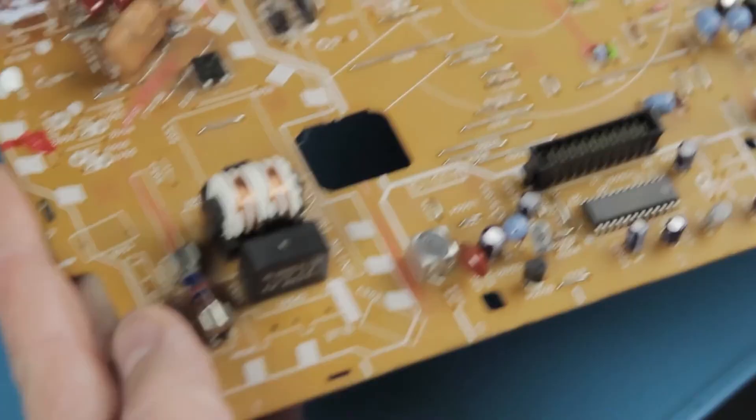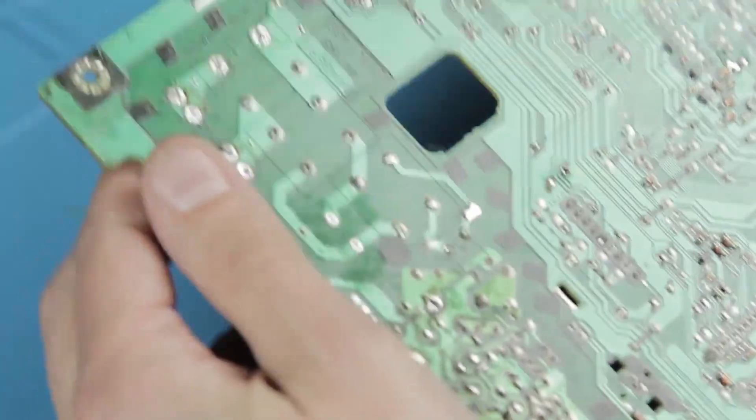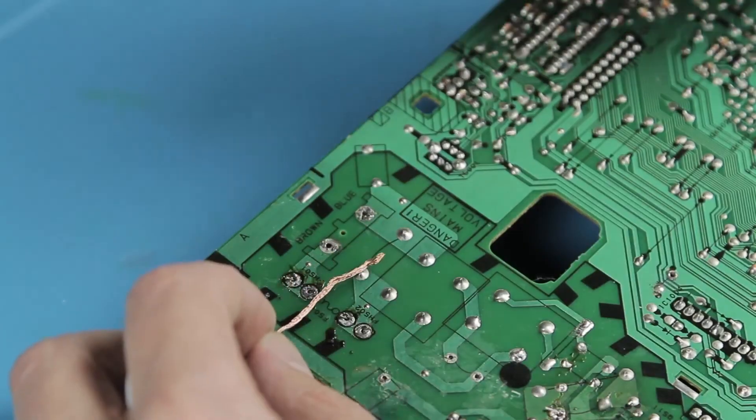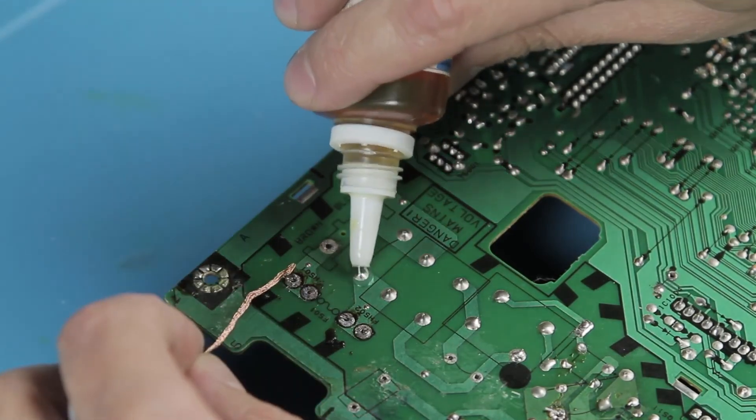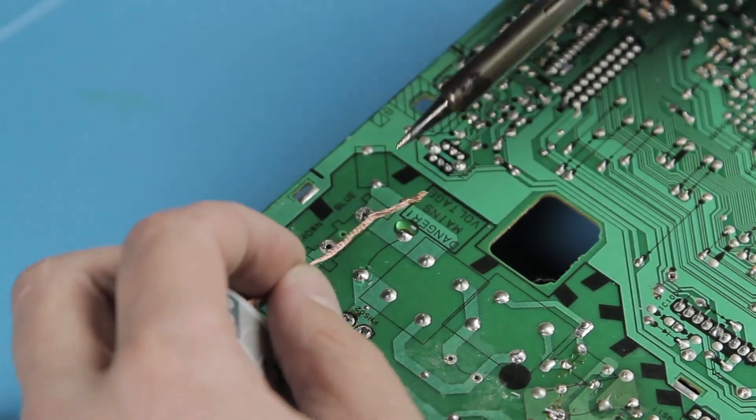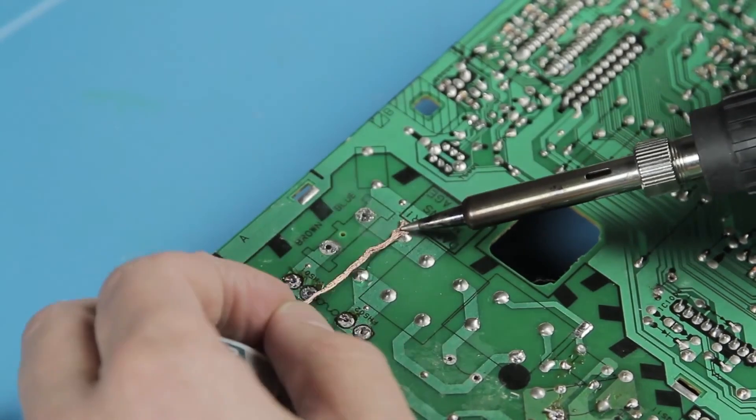If you need to unsolder a massive capacitor or other component from the board, you can use a solder tape to remove the solder. The solder sticks to the tape and frees the capacitor leads.